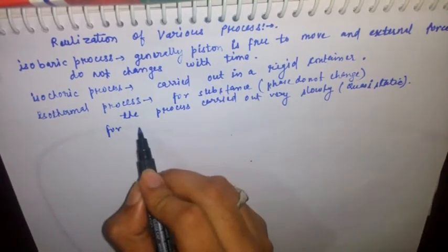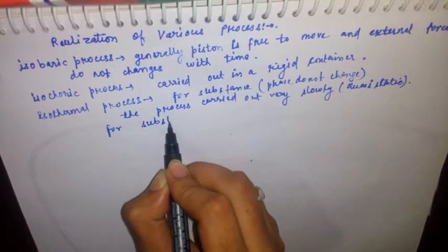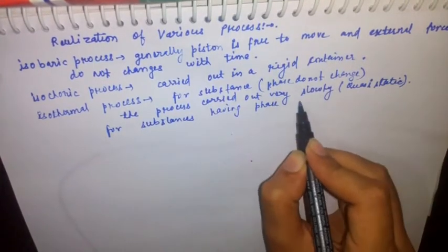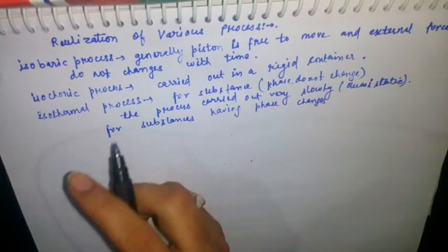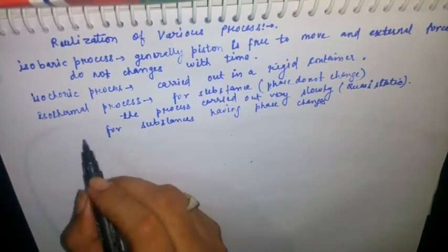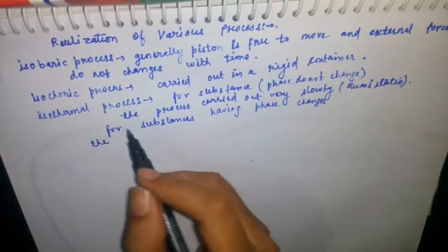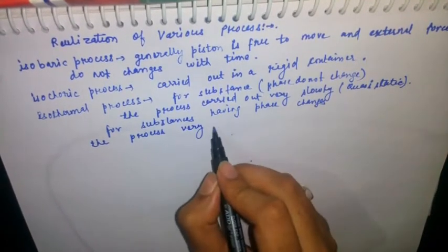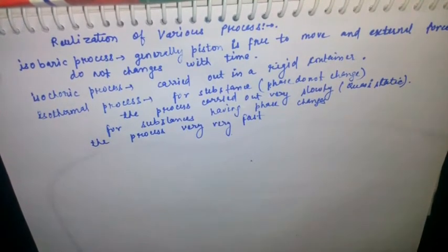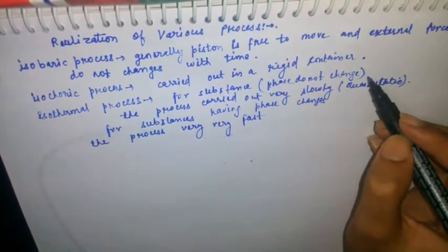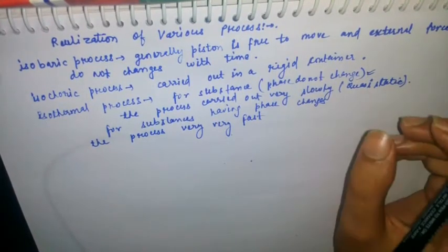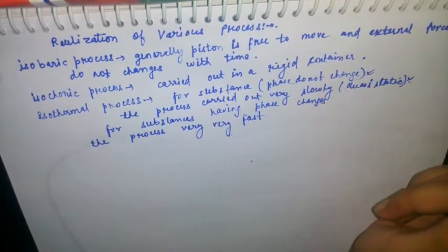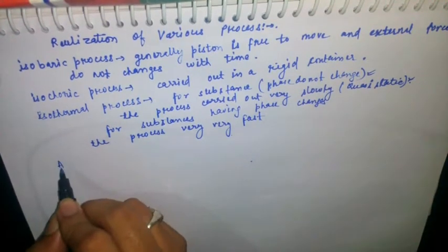For substances whose phase changes, the process is very fast. So for isothermal process, it is divided into two parts: for substances whose phase does not change, the process is quasi-static or very slow; and for substances whose phase changes, the process is very fast.